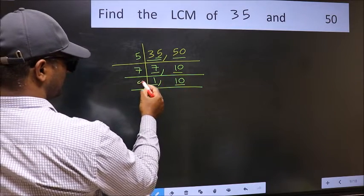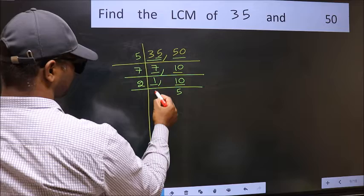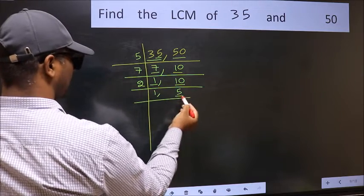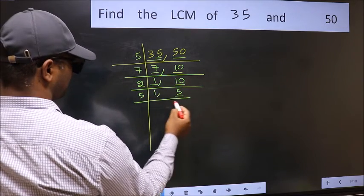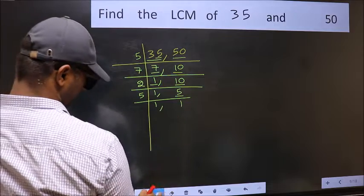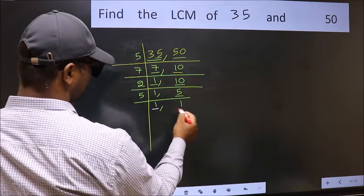10 is 2 times 5. Now here we have 5. 5 is a prime number, so 5 times 1 is 5. So we got 1 in both the places.